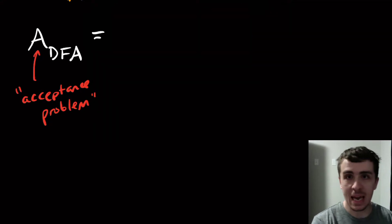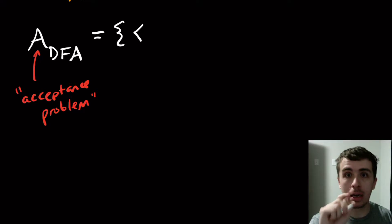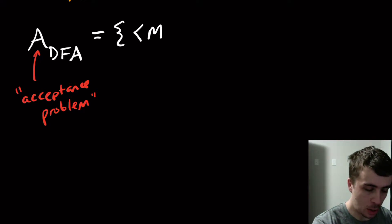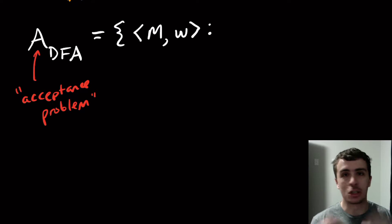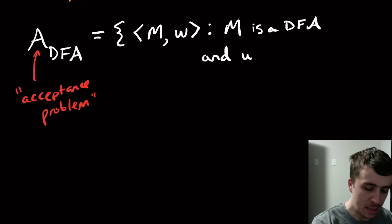This is going to be a language, just like any other language like sigma star or whatever, but it's going to encode various things. So it's going to be all the strings that are encodings of two things, which are a DFA along with an input string. It can't just be any combination of a DFA and a string. We require that m is a DFA.